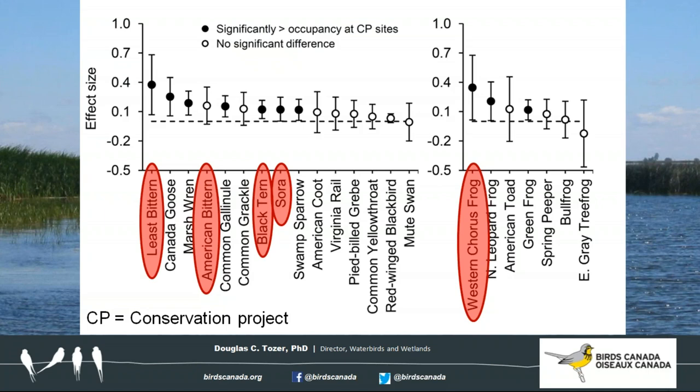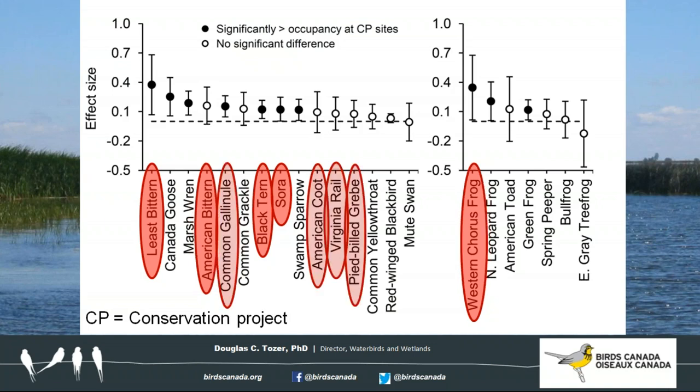Occupancy of all species except mute swan and eastern grey tree frog was higher at conservation project wetlands compared to unmanaged wetlands. Just under half of species showed significantly higher occupancy at conservation project wetlands. Notably, five species showing higher occupancy at NAWMP conservation project wetlands are listed as at risk or of conservation concern in Ontario. Populations of all five, plus another four — nine species total — are known to be declining throughout the southern Great Lakes region. Conservation projects under NAWMP appear especially useful for conserving and recovering these declining at-risk marsh bird and frog species.